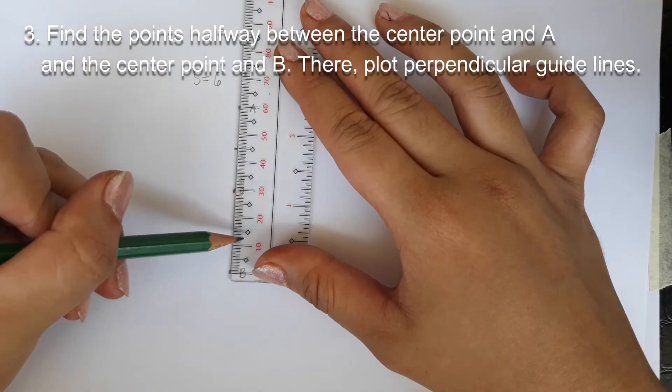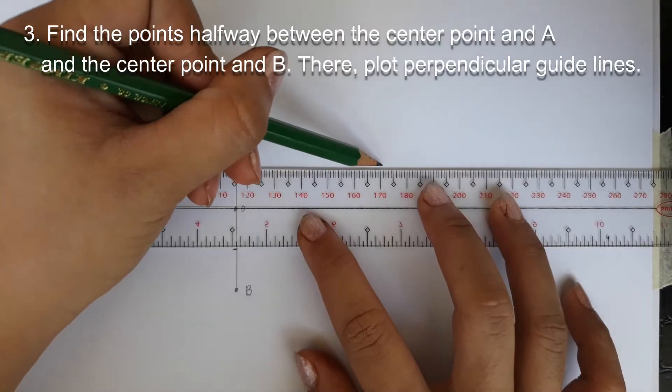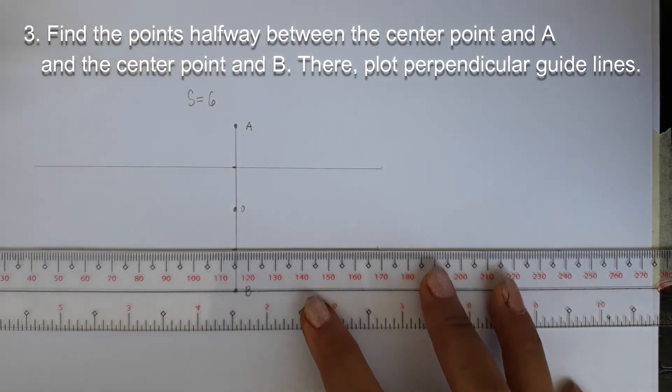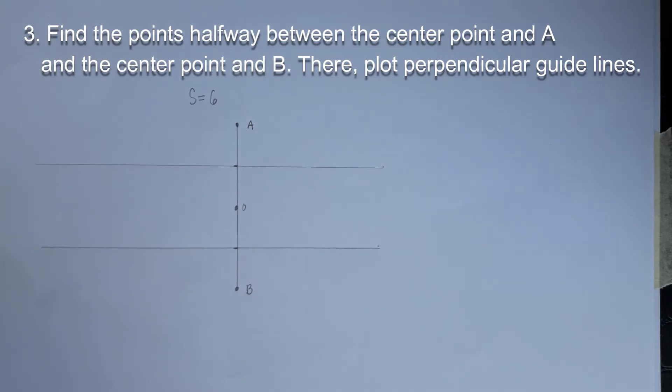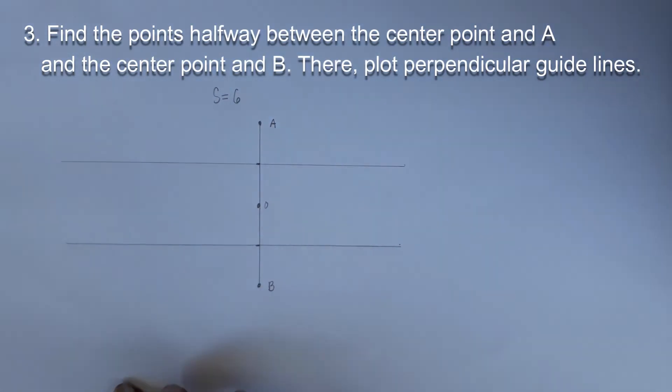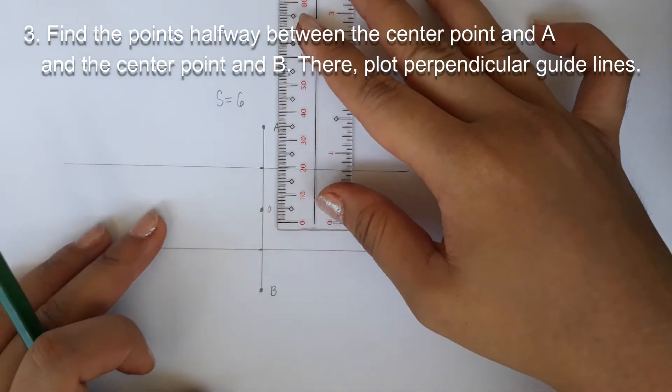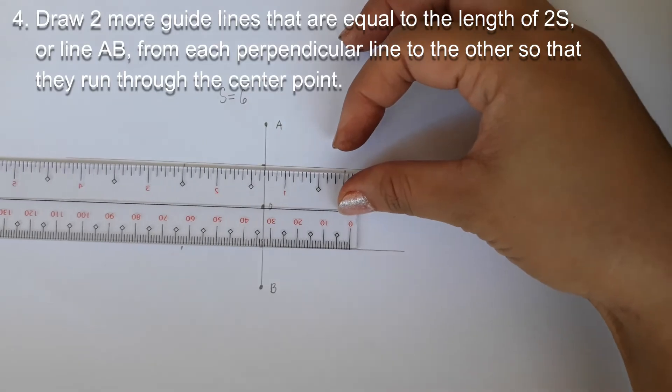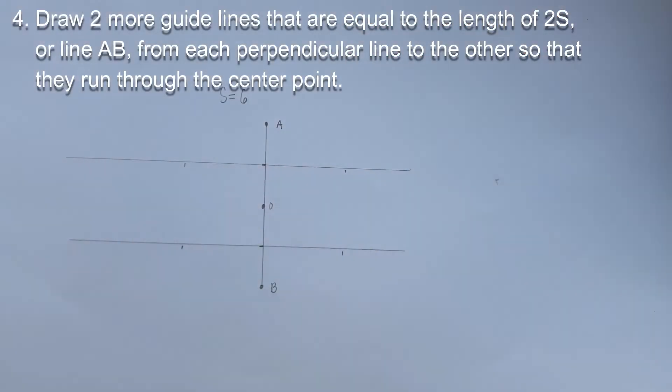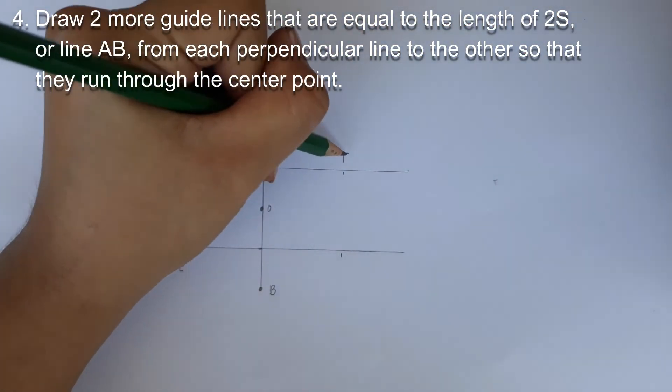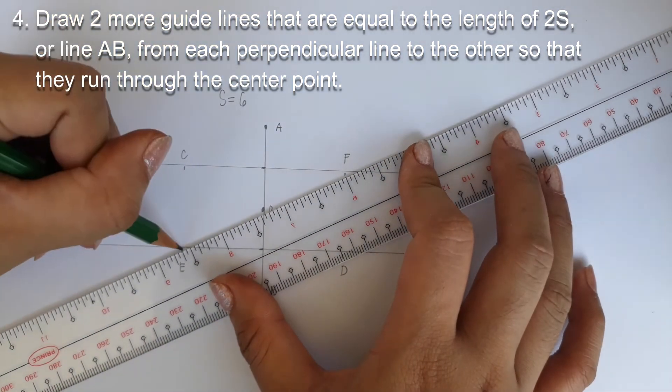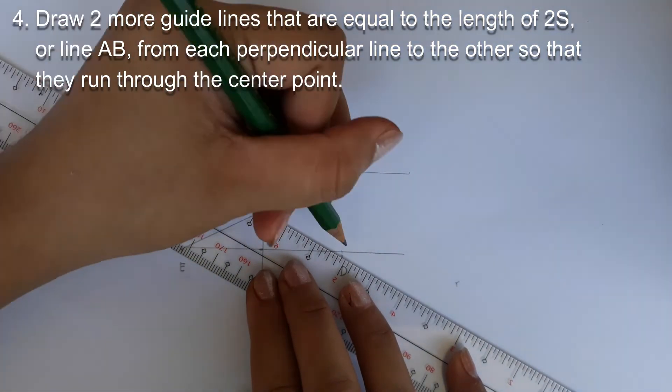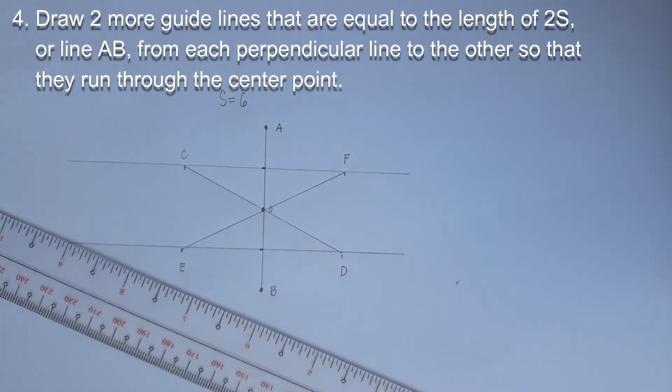Number 3. Find the points halfway between the center point and A and the center point and B. There, plot perpendicular guidelines. You'll erase this later so don't mark them dark. As a side note, the distance between the two guidelines is also equal to S. Number 4. Draw two more guidelines that are equal to the lengths of 2S, or line AB. From each perpendicular line to the other so that they run through the center point. The point where the guidelines intersect are the last four points of the hexagon. These can be called CD and EF.